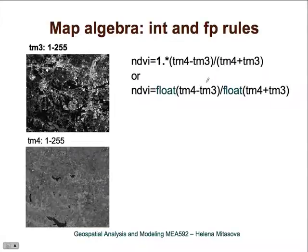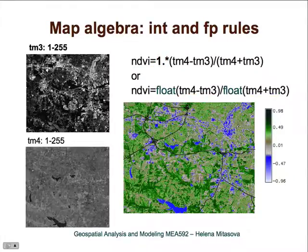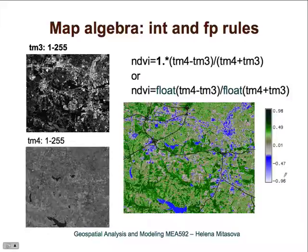We need to transform the computation to floating point. Depending on the software, sometimes it is enough just to multiply by a floating point number, so that at least one floating point number or map is in the expression — then the entire computation is done with floating point numbers. Or you can convert both expressions to floating point. Then you get a very nice map of the greenness index, varying from minus 0.96 to plus 0.98.